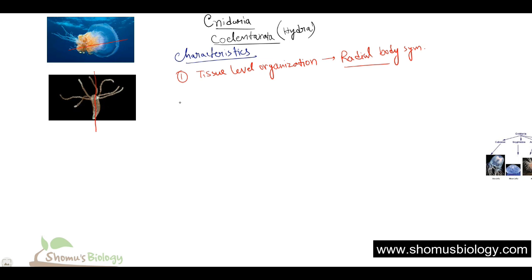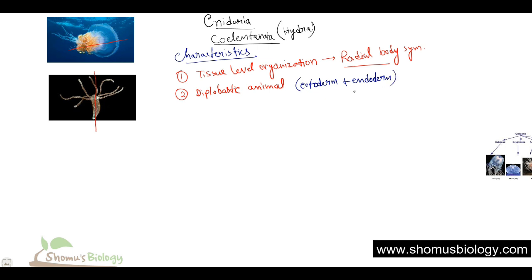In humans or mammals we all have bilateral symmetry. The second important property is about the tissue layers. Cnidarians are diploblastic animals because they have two different layers: ectoderm and endoderm. They are missing the mesoderm.